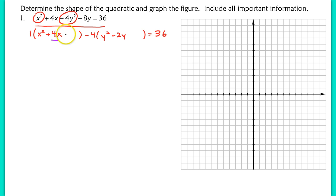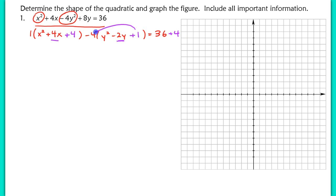Cut the linear term in half and square the value: cut 4 in half to get 2, square it to get 4. This is always positive, so add 4 to the other side to balance the equation. For the other linear term, cut it in half to get negative 1, square that to get positive 1. When balancing on the other side, make sure you multiply this value by the factor out in front — so we're actually taking away 4 on the other side.